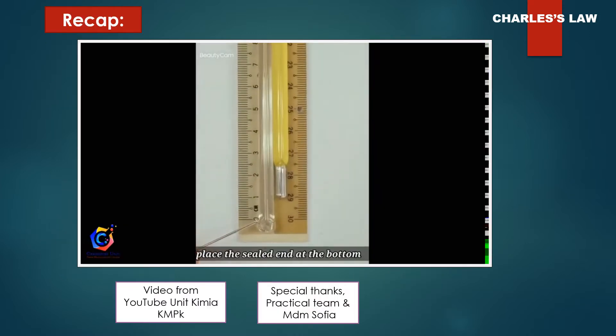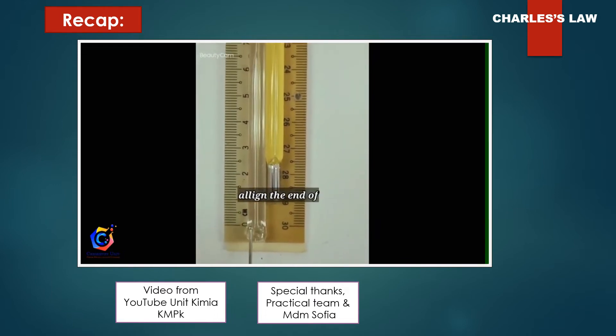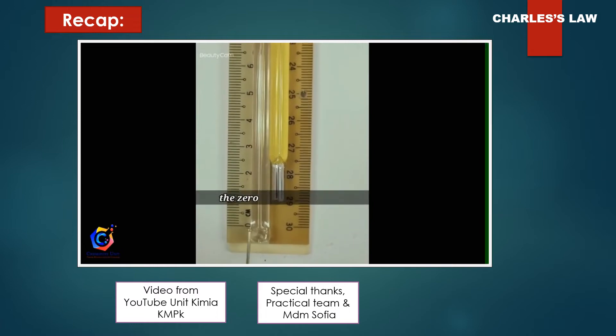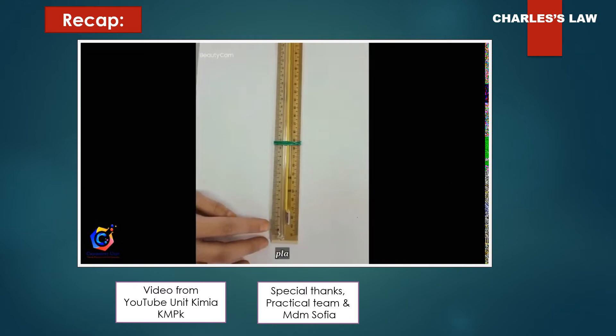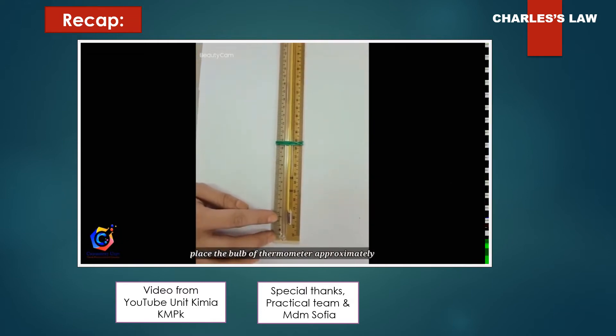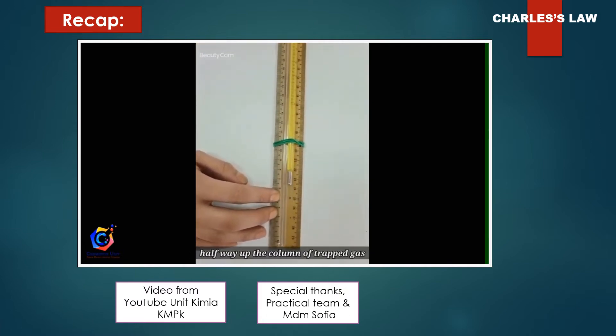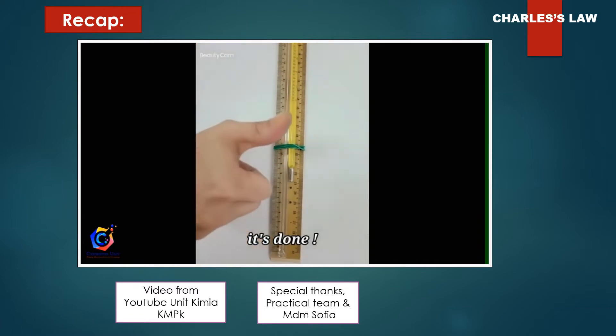Now have a short recap. Don't forget, align the end of the gas column with the zero mark of the ruler. Place the bar of thermometer approximately halfway up the column of trapped gas.